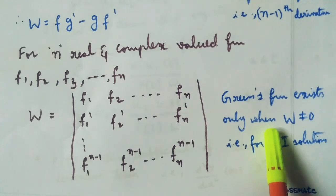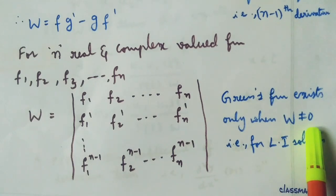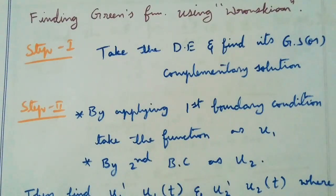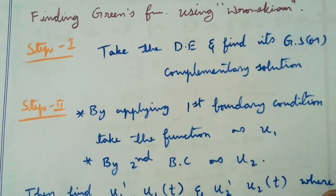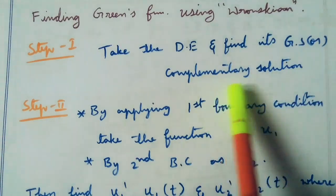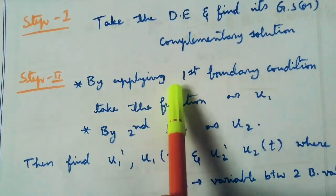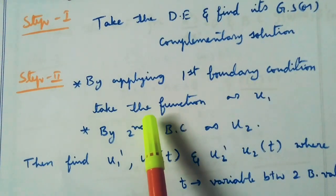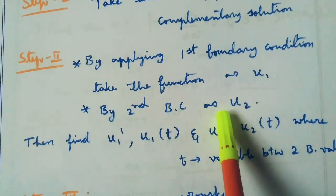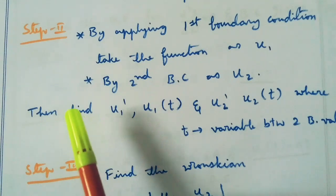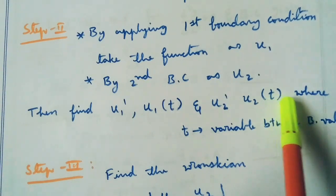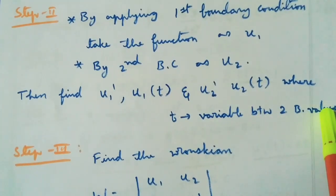Green's function exists only when Wronskian W is not equal to 0, that is for linearly independent solutions. There are four steps to find the Green's function using Wronskian. The first step is to take the differential equation and find its general or complementary solution. The second step is: by applying the first boundary condition, take the function as u1, and by applying the second boundary condition, take the function as u2. Then from u1 and u2, find u1 dash and u2 dash, where t is the variable between the two boundary values.